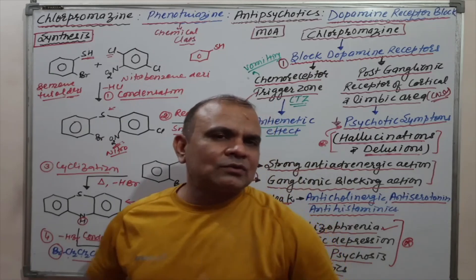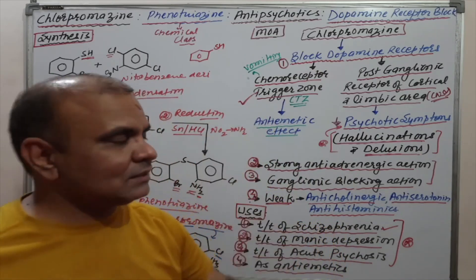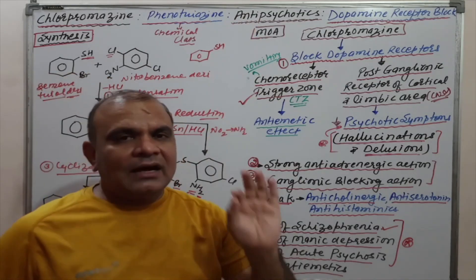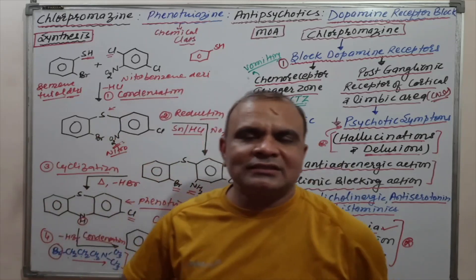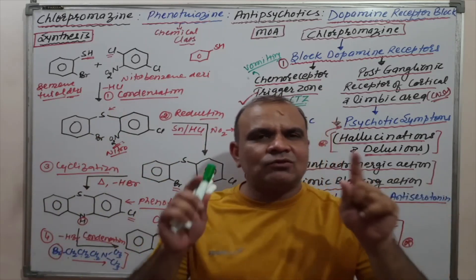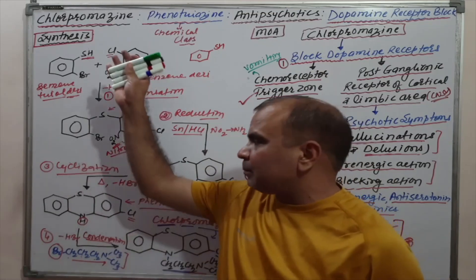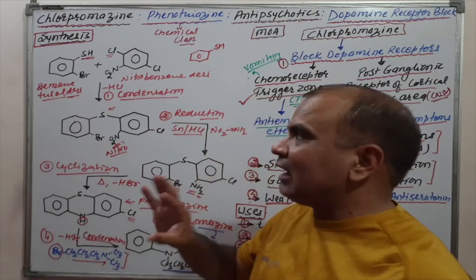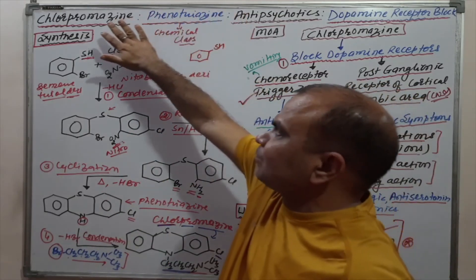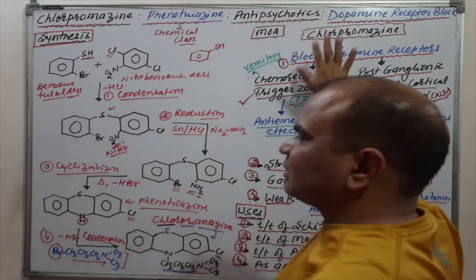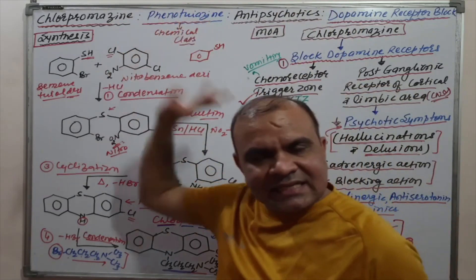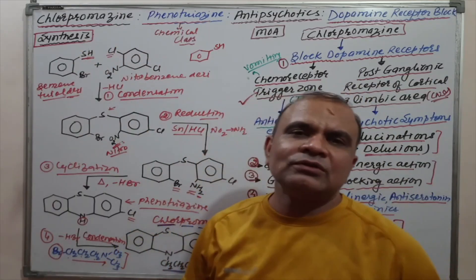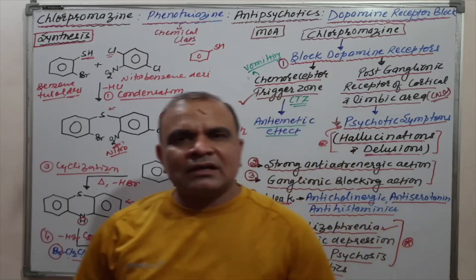There may be multiple choice questions related to the mechanism of action and usage of Chlorpromazine. If a question is asked in a university exam, you have to cover all things — starting from the name, categories, mechanism of action, usage, and synthesis. If the question asks only about synthesis, then produce only the synthesis. This is all about Chlorpromazine.